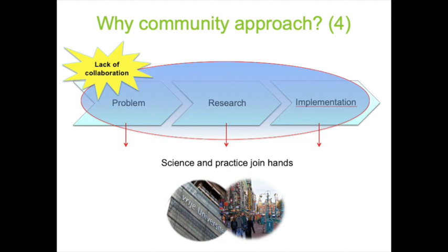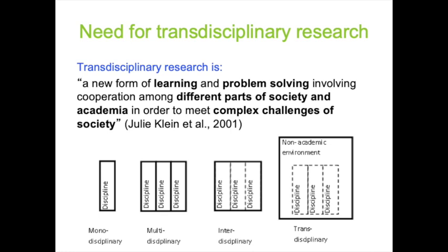That actually means that we enter into a new type of research. We are still scientists and want to do it in a good, scientific, structured way. Transdisciplinary research is defined as a new form of learning and problem solving involving cooperation among different parts of society and academia — multidisciplinary work as well as the link between science and society — to meet complex challenges of that society. It is really about problem solving. We can contrast it with monodisciplinarity, multidisciplinarity, interdisciplinarity, and transdisciplinarity.